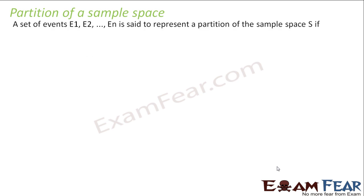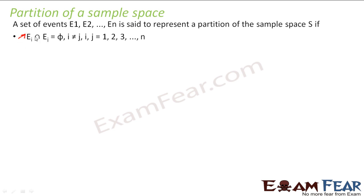The set of events e1, e2, e3 till en is said to represent a partition of a sample space if, when you take the intersection of any two of the sets, you get phi — there is no common element within these sets. You take any two sets, there will not be any common element.